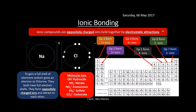You also need to know a few molecular ions. Hydroxide is OH⁻, nitrate is NO₃⁻, ammonium is NH₄⁺, sulfate is SO₄²⁻, and carbonate is CO₃²⁻. Make sure you know these — they are very important because you'll see them a lot in chemistry. Make sure you know their charges; there's one positive one which is ammonium, but most of them are negative.